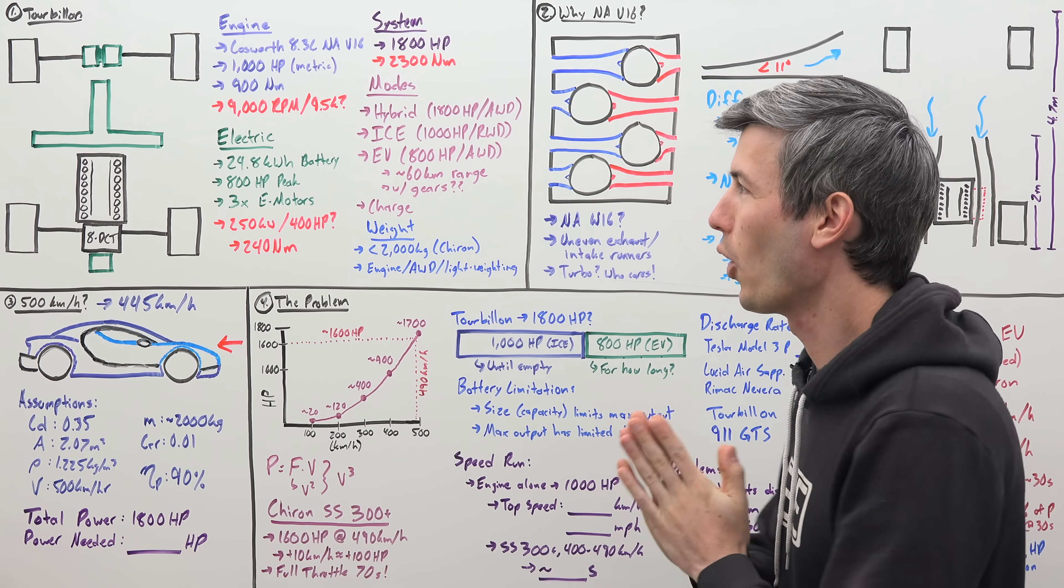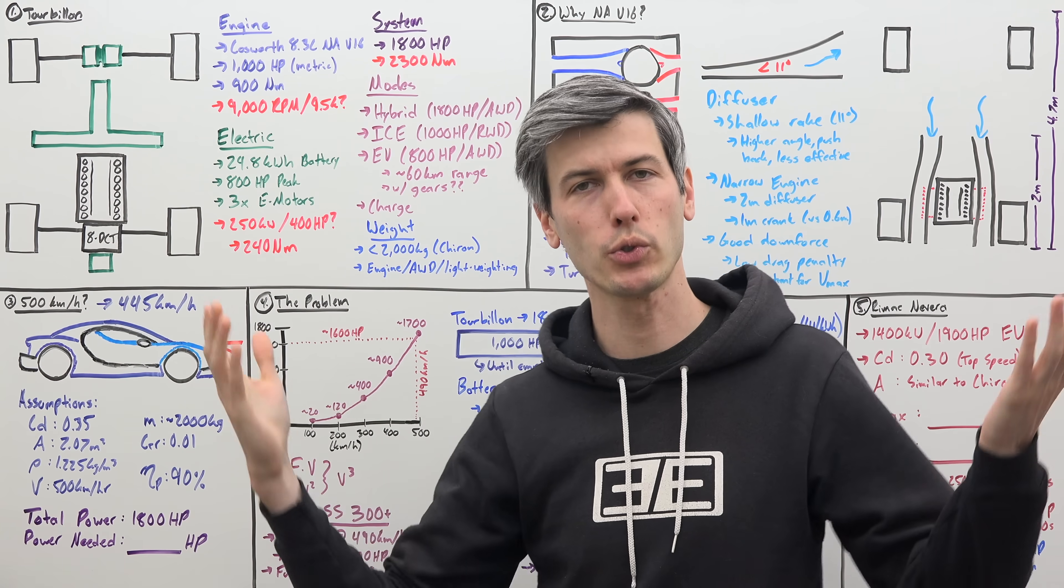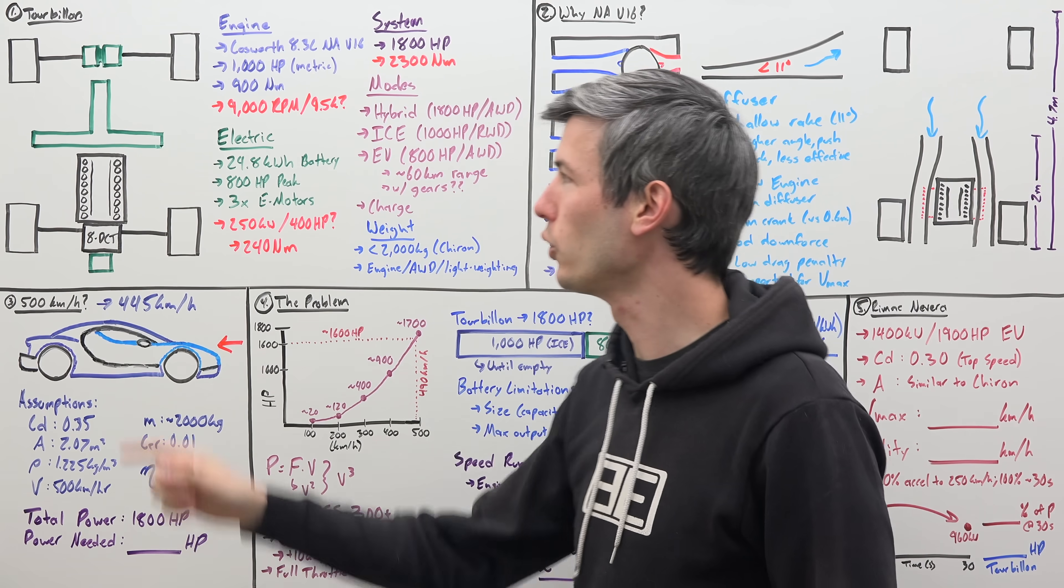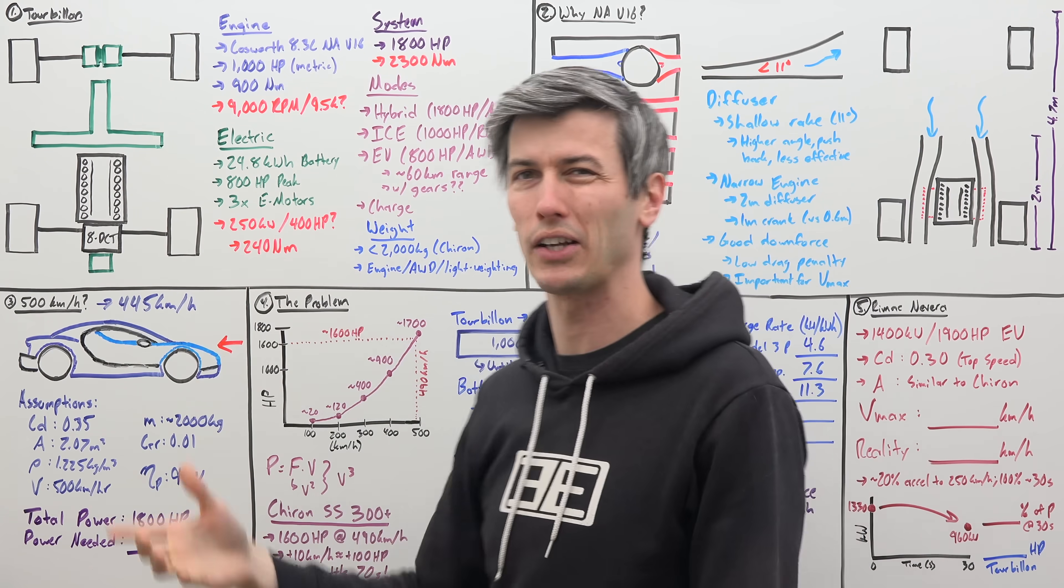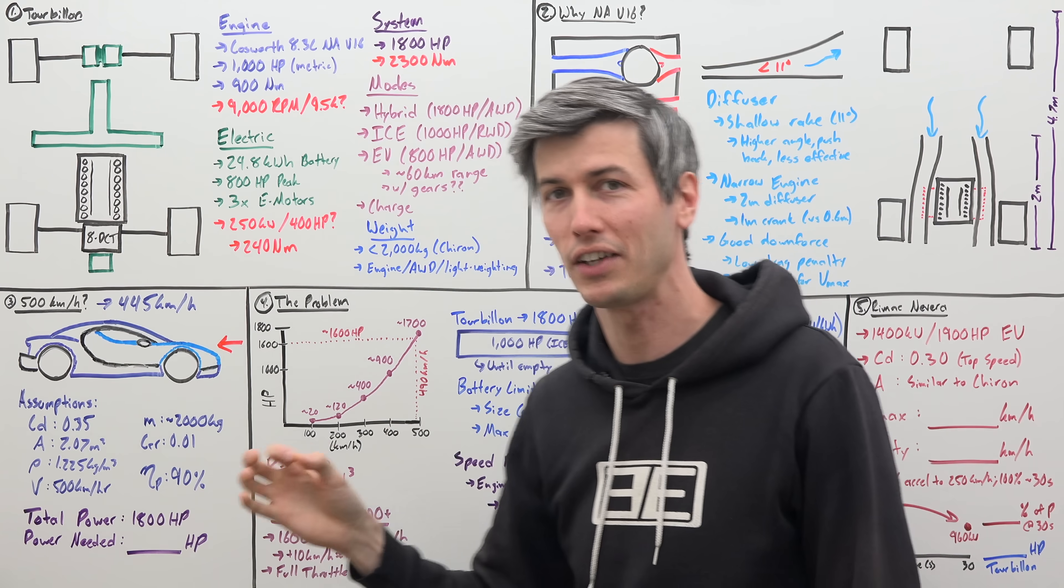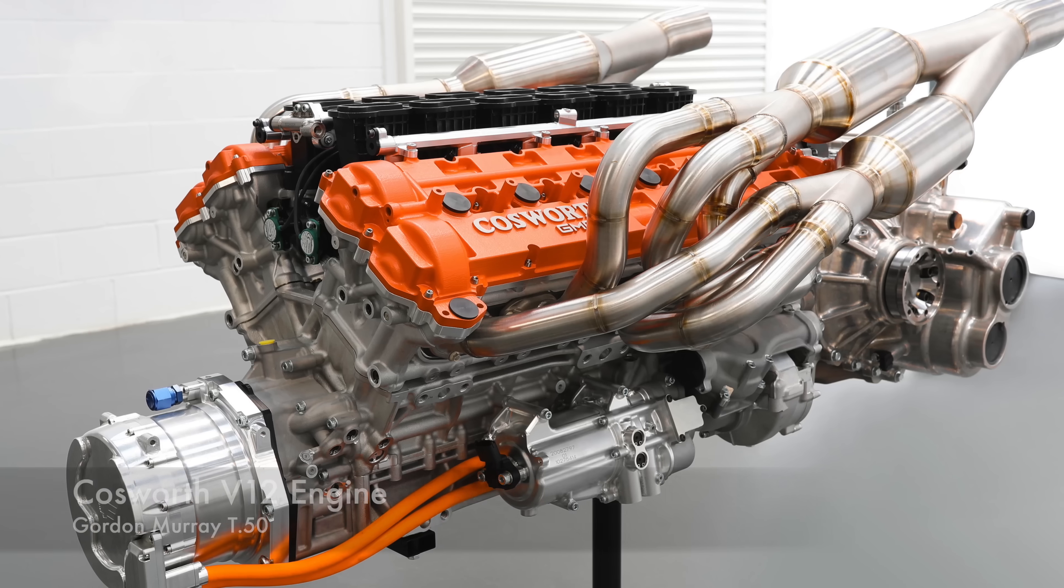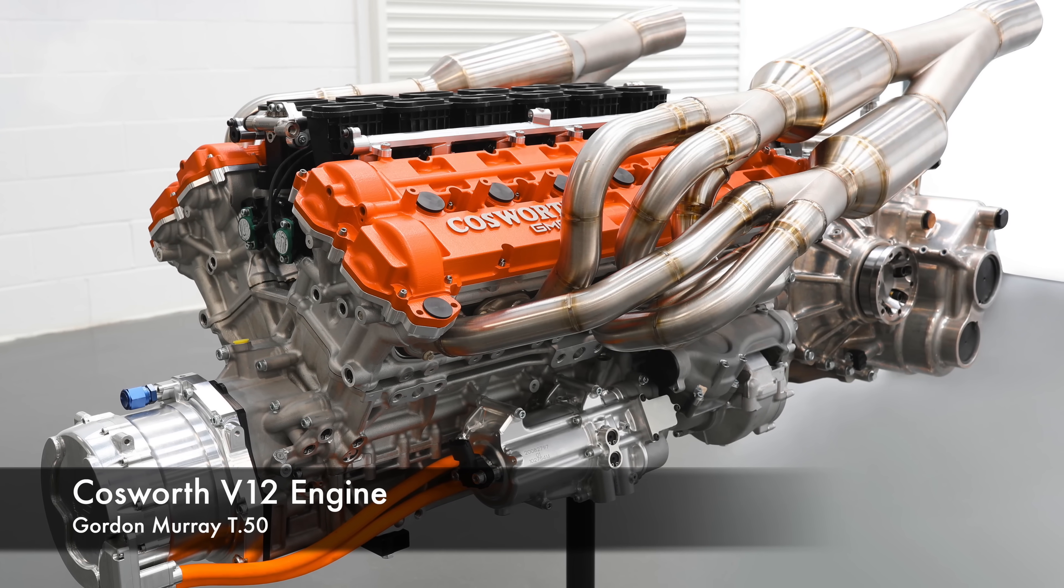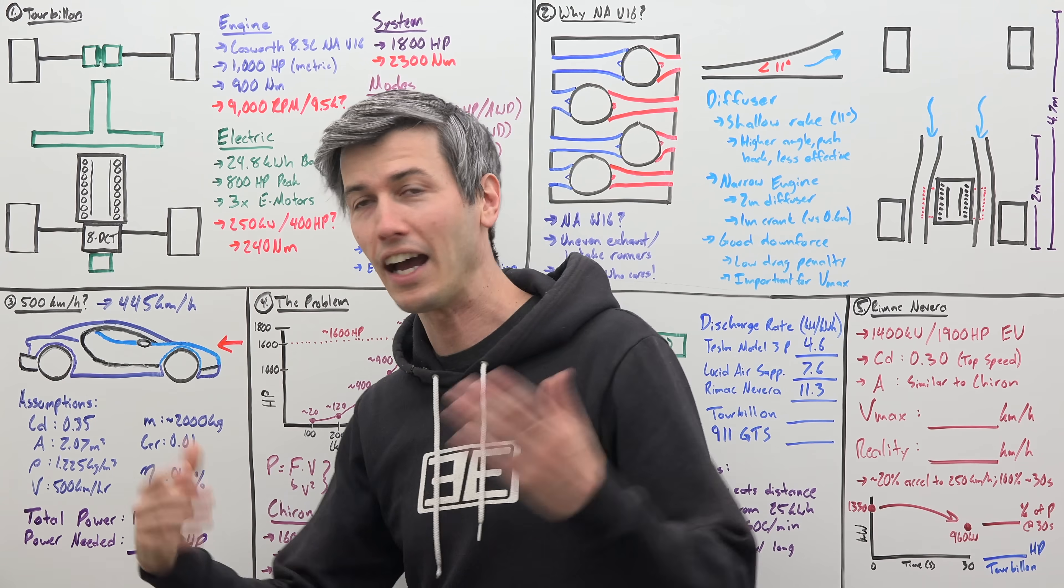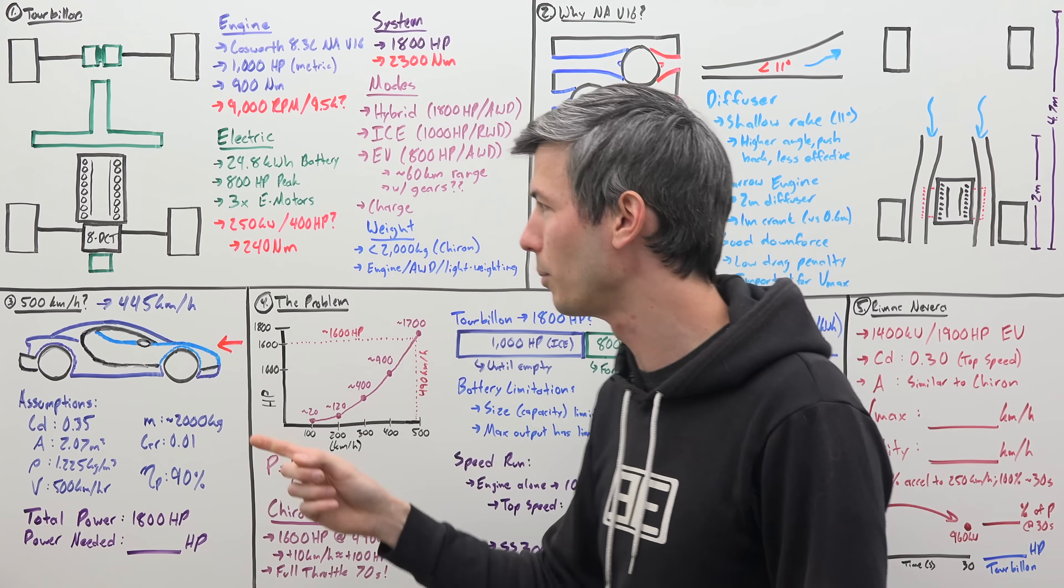All right, so let's start off with an overview of the powertrain. In the front, we have two electric motors. You have true torque vectoring up front. Just behind that, and sandwiched between the seats, you've got your battery pack. This is about a 25 kilowatt hour battery. Behind that, you have the naturally aspirated V16, 8.3 liters developed by Cosworth.